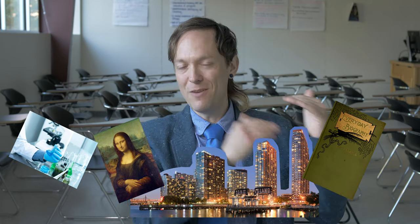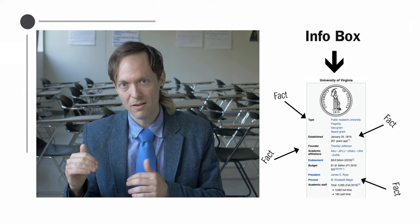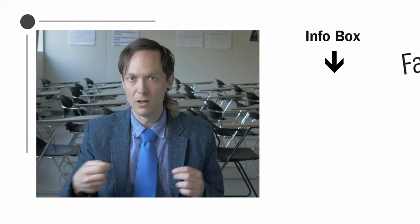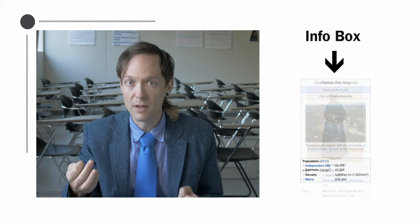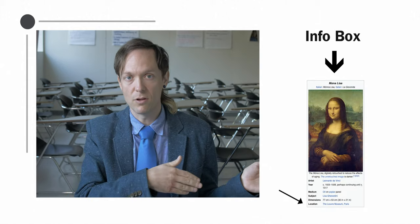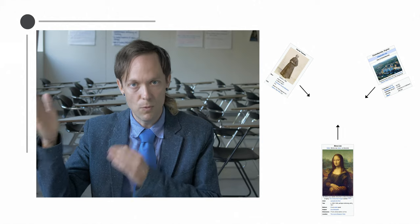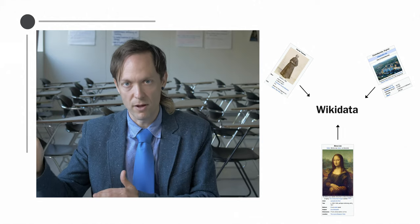Say for example you have a Wikipedia article that's a biography, or it's covering a piece of art, a laboratory, or a city. In the Wikipedia article, there's often something called an info box, which has quick facts that are information someone should know to orient themselves to the article — like the birth and death dates of a person, the population of a city, or the location of a building or artwork. If one puts this information into Wikidata as the central repository, then